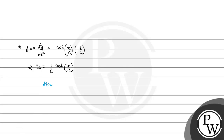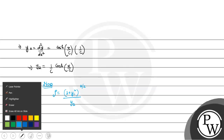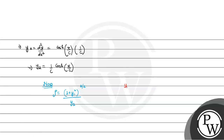Now the radius of curvature rho is equal to (1 + y1²)^(3/2) divided by y2, where y1 = dy/dx and y2 = d²y/dx².